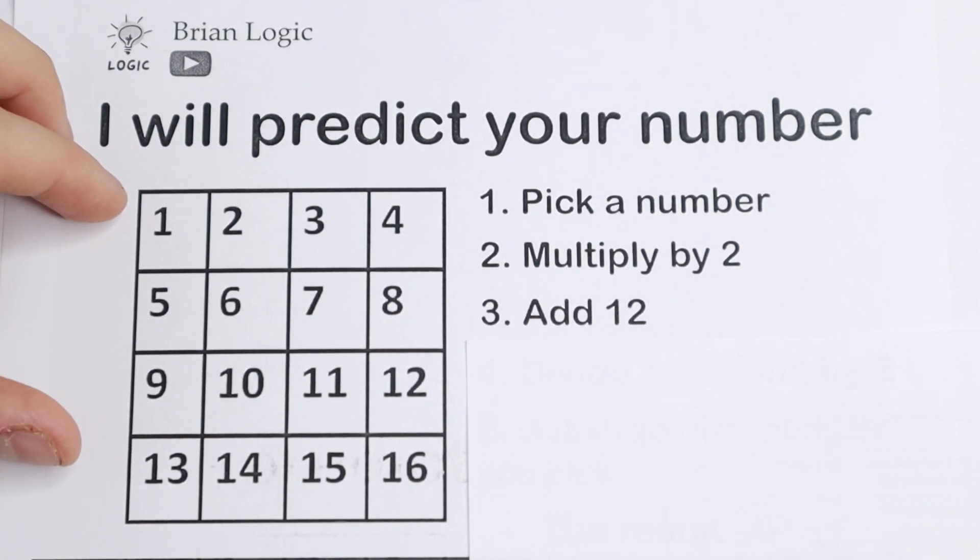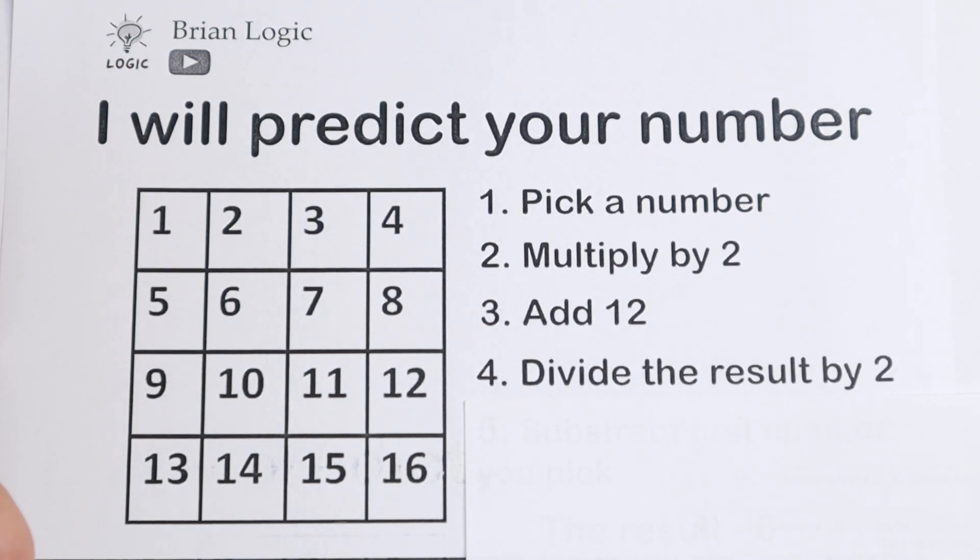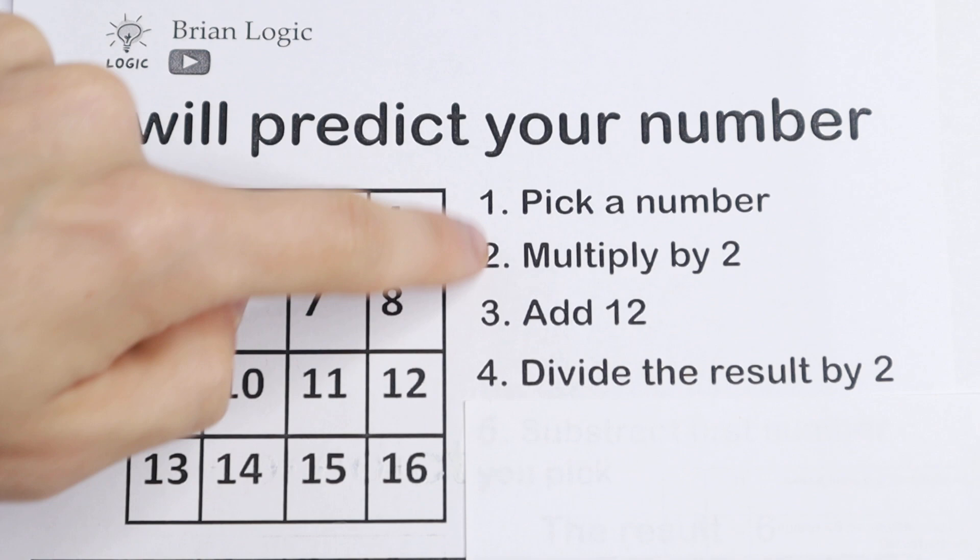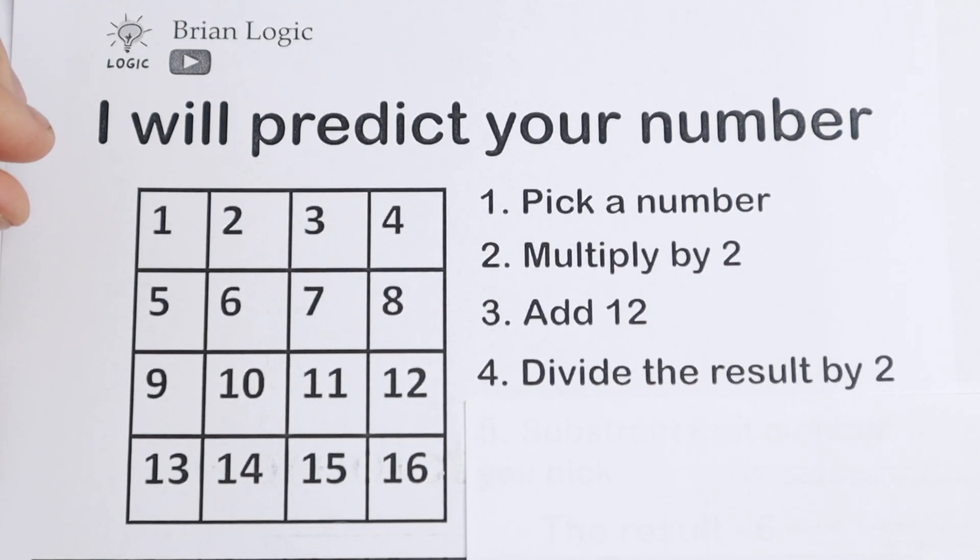So let's go next. I hope you do this step. First step you need to divide the result by 2. For example you have after this three step, for example, 14. You're dividing by 2, you will have right now 7. So do this step and I hope you'll do this correctly.